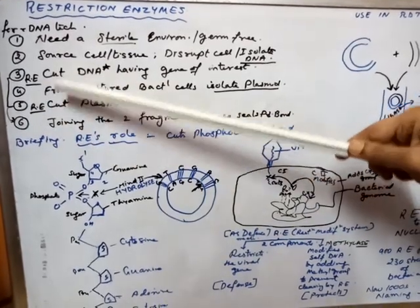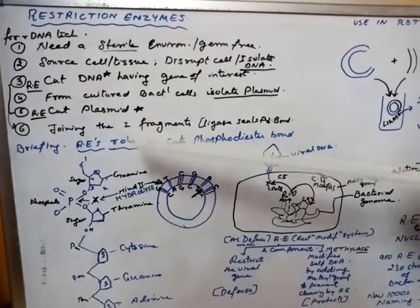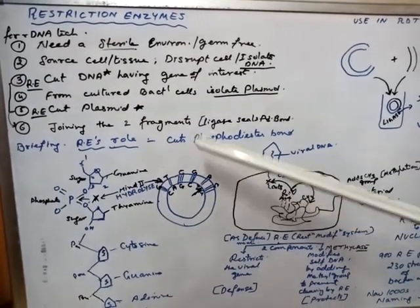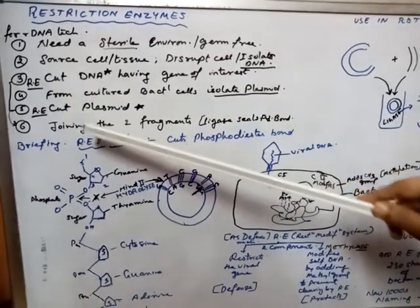This is exactly where restriction enzymes are used as a tool and if we cannot cleave it, then recombinant technology is just not possible. That is one particular enzyme we are going to talk about now.